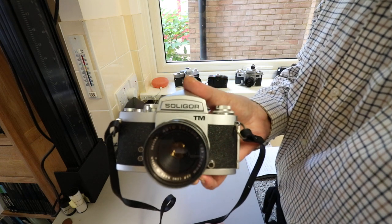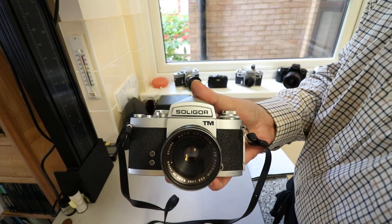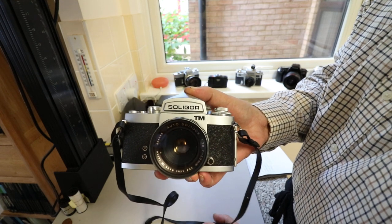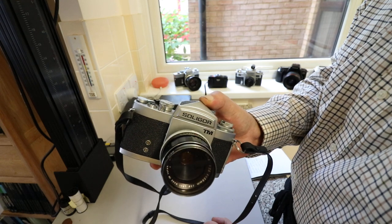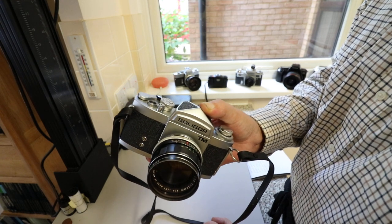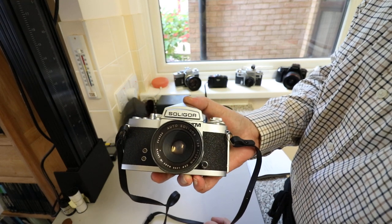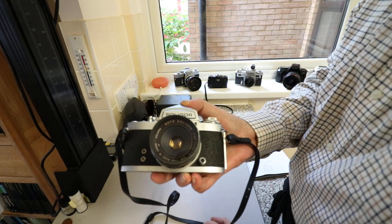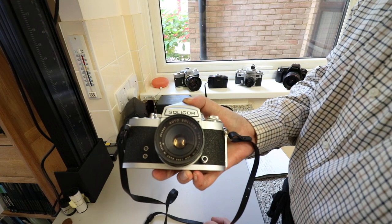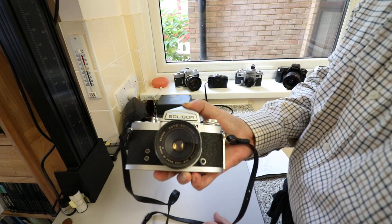This is a Soligor TM, and Soligor was really just a brand name. Contract manufacturing is nothing new. It existed when this camera came out in 1974, the same year as the Fujica ST901 we looked at yesterday. But this is a very old-fashioned camera in comparison.